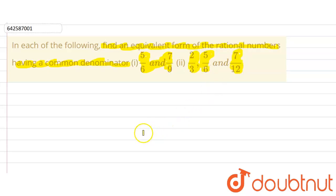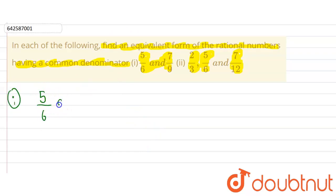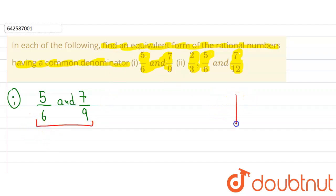In this question we have to find the equivalent form of these rational numbers having a common denominator. Let's take the first part, which is five upon six and seven upon nine. Here we can see the denominators are different, therefore to have a common denominator we'll take the LCM of six and nine.